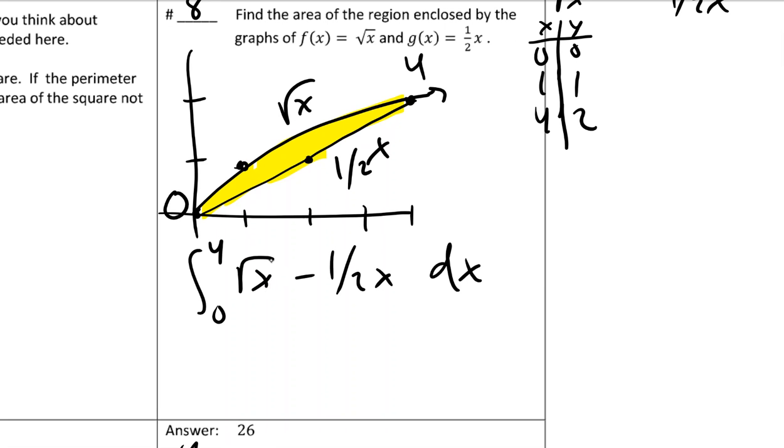If I undo power rule here, raise the power by one, divide by the new power, do that here. That's how it integrates, and then to plug in the four.